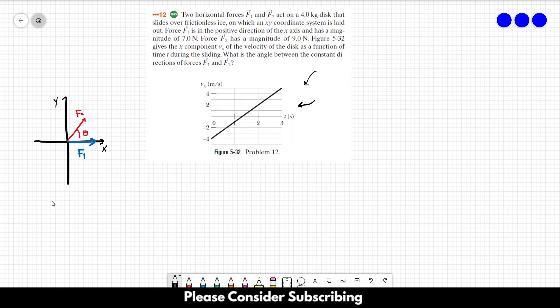So we can calculate the acceleration in the x direction by using delta Vx over delta T. Let's take this point and this point. From those points, the velocity changed from minus 4 to 5. So delta V in this case is 9, and it passes 3 seconds. So the acceleration is 3 meters per square second.